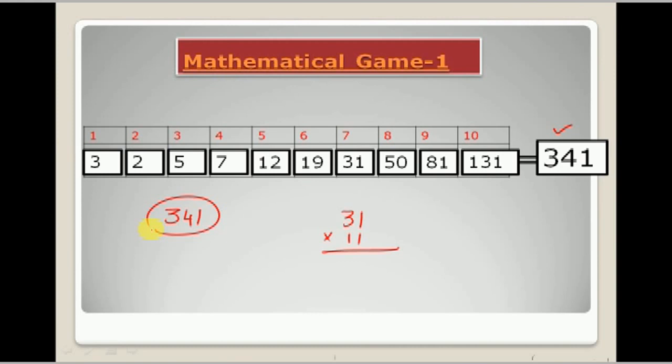Now let us suppose that if you come across a larger number, for example, instead of 31, you have 6 and 7, then what will you do?